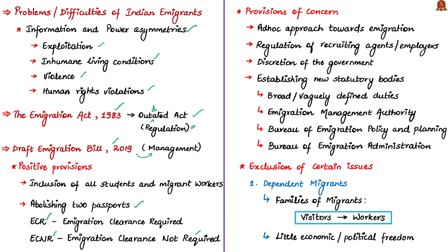Now let us see some negatives of this draft bill. First, they tell that this bill continues the post-1983 ad hoc approach towards emigration — where ad hoc means emergency. The draft bill still relies on the regulation of recruiting agents or employers. Also, many provisions give more powers to the government of the day, so it is completely based on the discretion of the government.